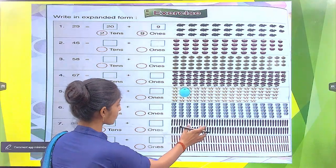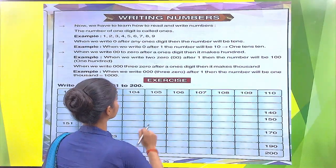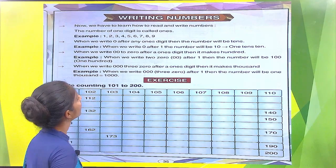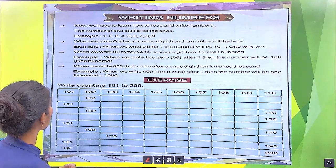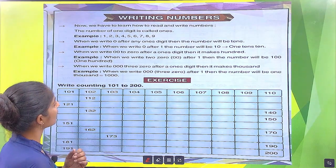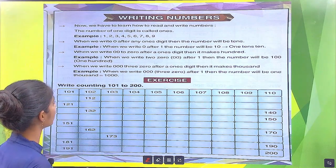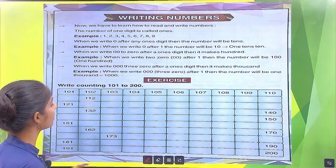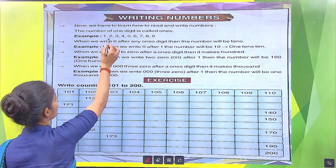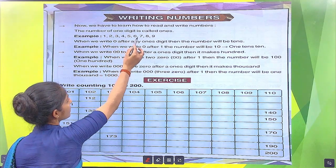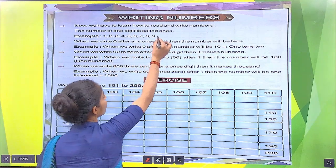Open your next page. Writing numbers. Now we have to learn how to read and write numbers. The numbers of one digit are called ones. Example: 1, 2, 3, 4, 5, 6, 7, 8, 9 — these are ones numbers.